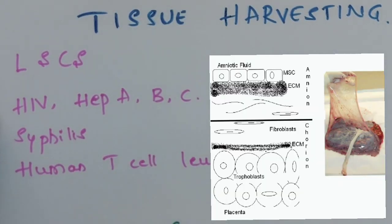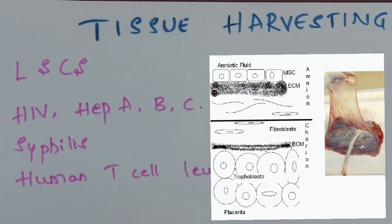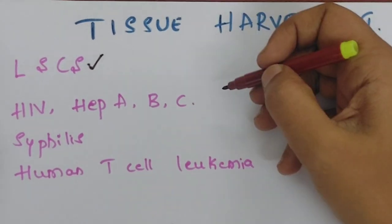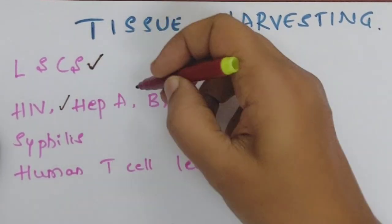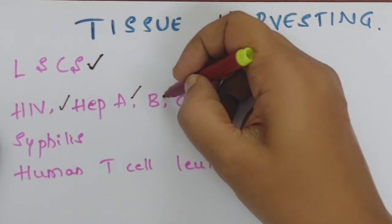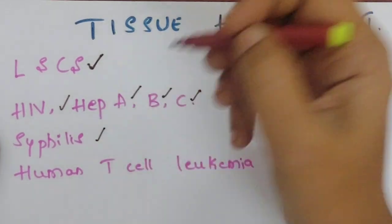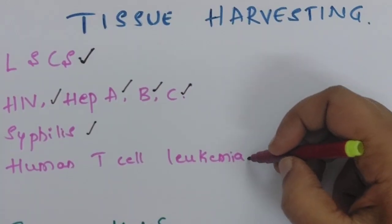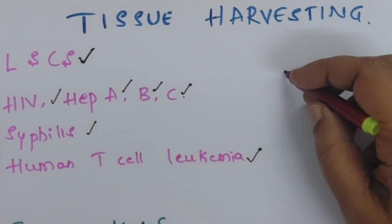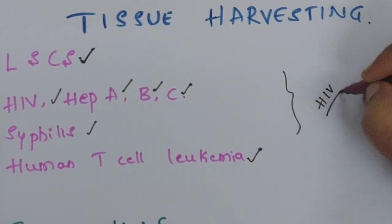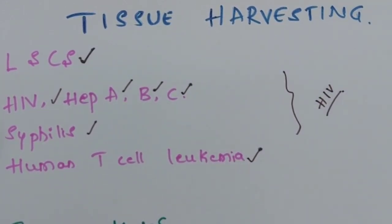The amniotic membrane is obtained from the placenta. Following a C-section, the placenta is obtained and the mother would have been screened for HIV, hepatitis A, hepatitis B, hepatitis C, syphilis, and human T-cell leukemia. Ideally, at least the HIV and hepatitis status has to be repeated after 6 months of obtaining the amniotic membrane.